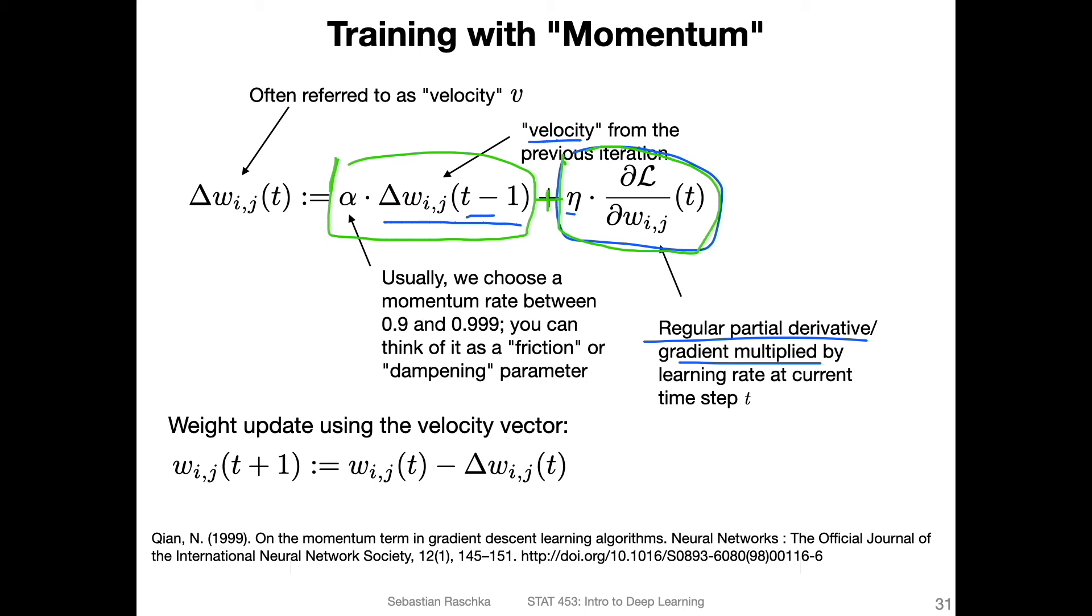The alpha here, this is the momentum rate. Usually in practice, we use the momentum rate between 0.9 and 0.999. You can think of it as a friction or dampening parameter. The larger we make this, the larger this term, the previous velocity term will become. In that way, the larger this alpha is, the more the normal update will be influenced by the previous update.